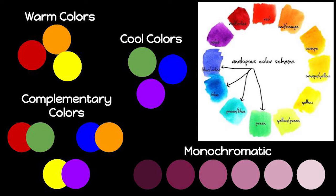And then we have analogous color schemes, which is any two or three colors that touch each other on the color wheel, like purple, red, and orange, or yellow, green, and blue.